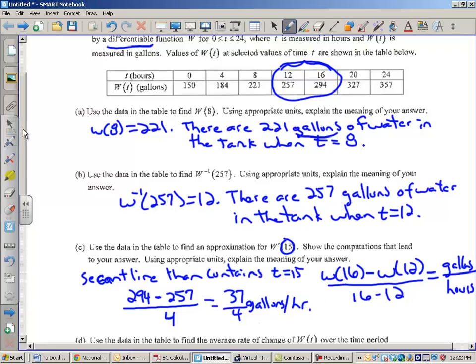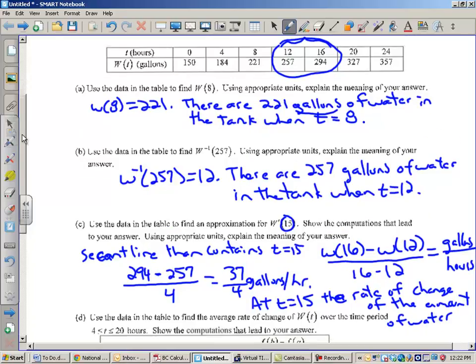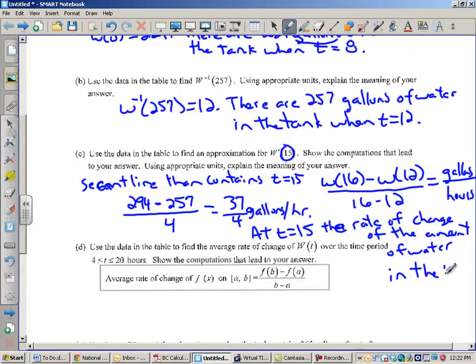So, this is 37 fourths gallons per hour. Now, explain the meaning of your answer. This is an approximation to the rate of change to the water flowing into the tank. So, I would say that at T equals 15, the rate of change of the amount of water in the tank is approximately 37 fourths gallons per hour. So, at that time, instantaneously, we are approximating that the amount of water in the tank is changing at the rate of positive 37 fourths gallons per hour.